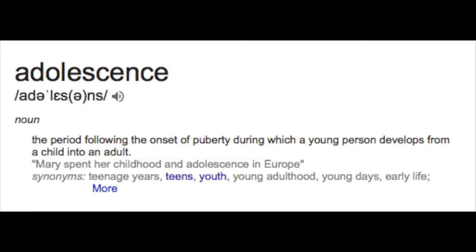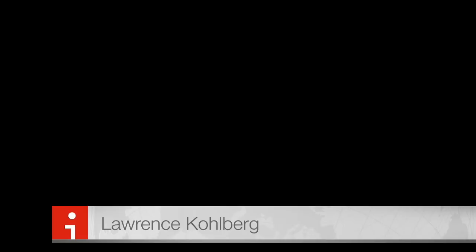The textbook definition of adolescence is as follows: it is the period following the onset of puberty during which a young person develops from a child into an adult.